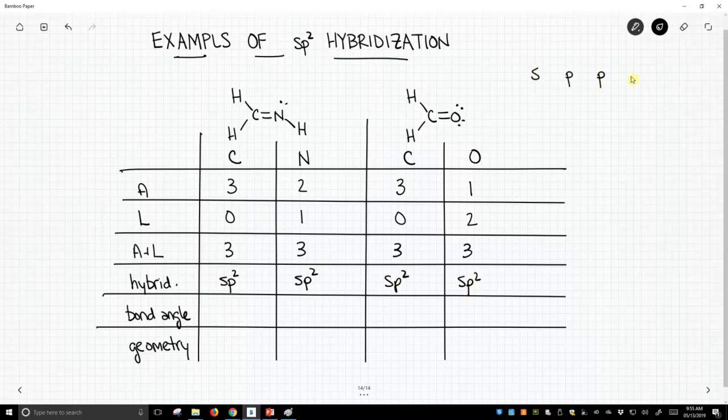If you get three hybrids is to be sp², then we'll have a leftover p orbital. Now what are our bond angles? Any sp² hybridized atom is going to have a bond angle of 120 degrees.